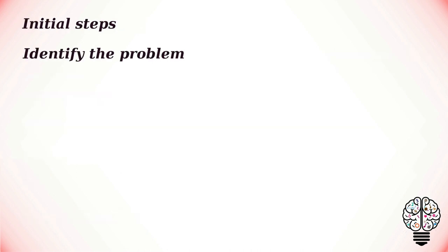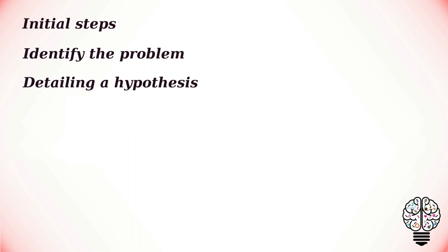The initial steps involved in a quasi-experiment are essentially the same as those employed with experimental designs. First, a problem must be identified, and then a hypothesis spelled out in detail and to the point. Usually, pre-selection and randomization of groups is often difficult.